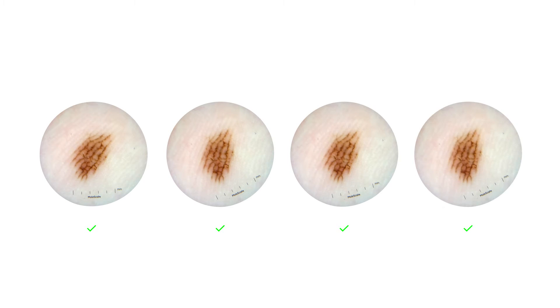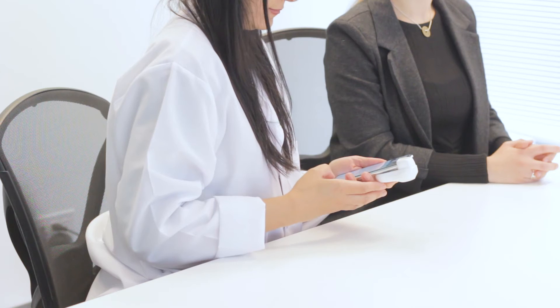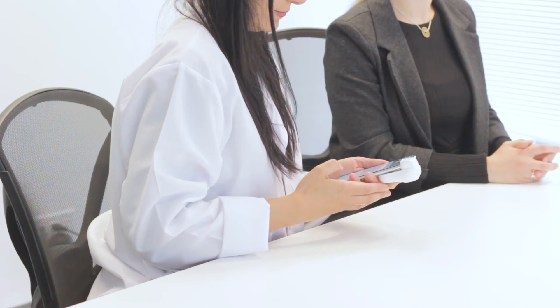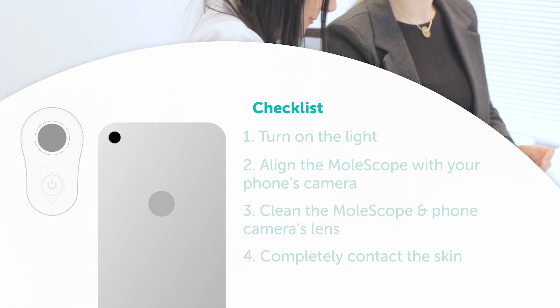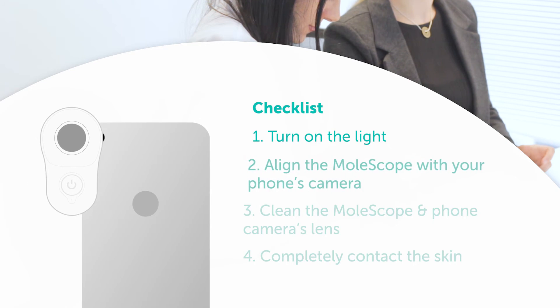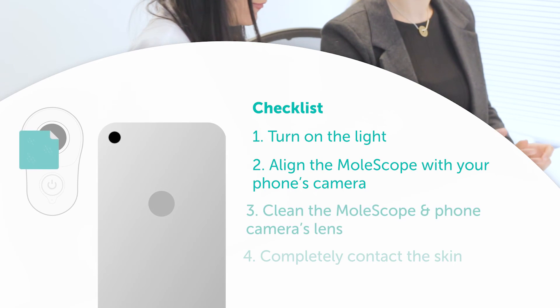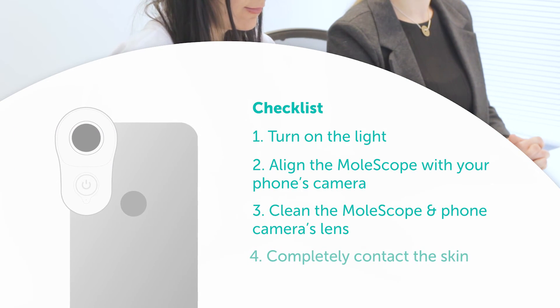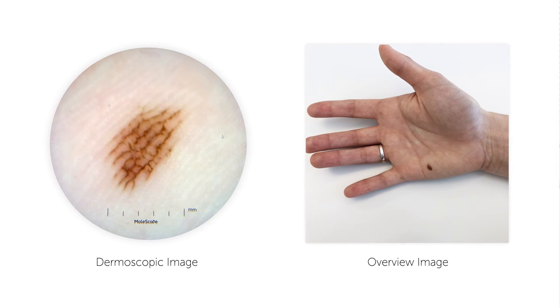At this point, you can take multiple images of the same spot to help you capture the highest quality image. Imaging properly can be difficult depending on where the lesion is on your body, so it is recommended to have a friend or family member help. Here are some imaging tips: remember to turn on the light, make sure the Molescope is fully aligned with your phone's camera, make sure both lenses are clean, and make sure you have complete contact with the skin. A high quality image will be clear, in focus, and centered.